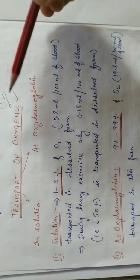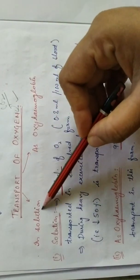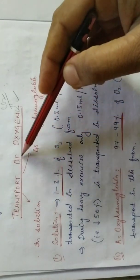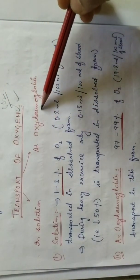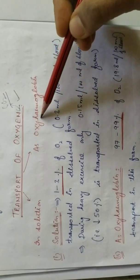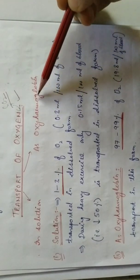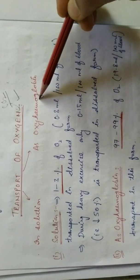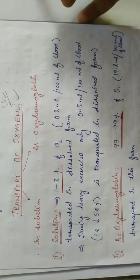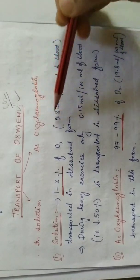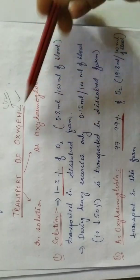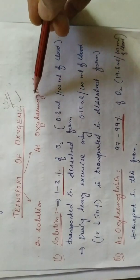Transport of oxygen takes place by two ways. One is the oxygen being transported in the form of solution, and the other is oxygen transported as oxyhemoglobin — that means oxygen which binds with hemoglobin. Hemoglobin is your respiratory pigment. So oxygen when it binds with hemoglobin to form oxyhemoglobin, it forms the major part of the transport of oxygen.